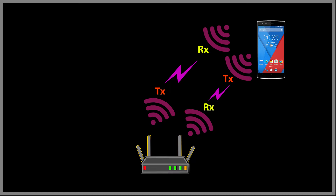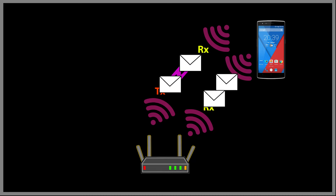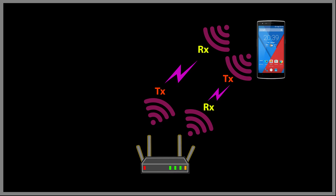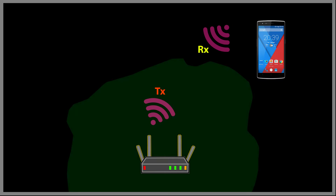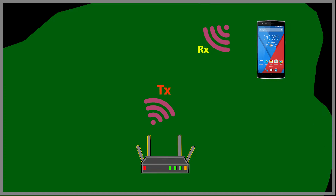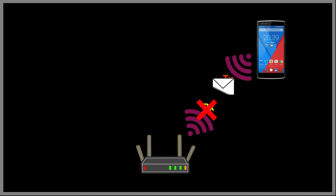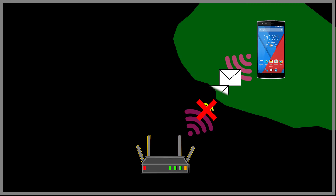Wi-Fi is a two-way communication and for it to be successful, both directions should be working fine. What happened here was that I only increased the transmit power of the access point, essentially enhancing only one direction of this communication. As a result, the signals now reach the destination but do not make it back to the access point, because the transmit power of the phone is much lower than that of the access point, preventing communication in the reverse direction.